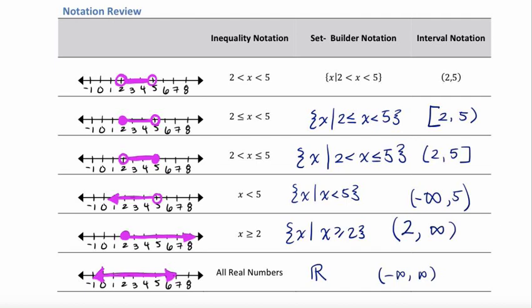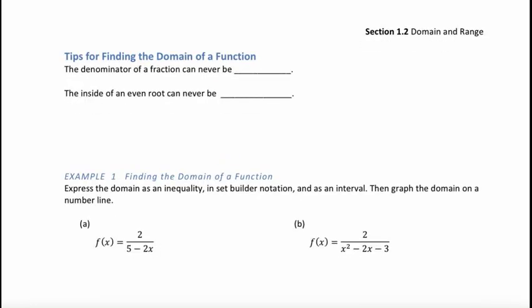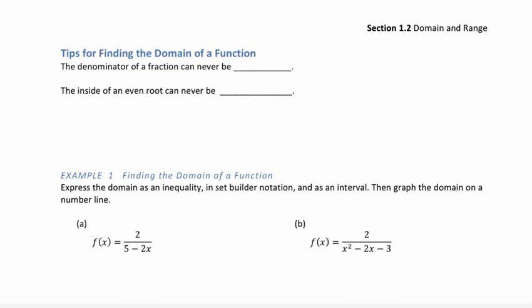Let's turn to page 8 of the required modules and discuss tips for finding the domain of a function. The denominator of a fraction can never be 0. And the inside — the radicand — of an even root can never be negative. So those are the two undefined operations to watch for.